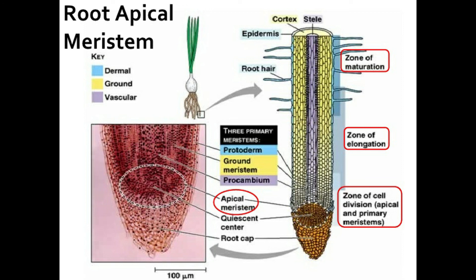Types of growth. Growth is of two types. Primary growth is aided by the apical meristems. Secondary growth is aided by the intercalary or vascular cambium, leading to an increase in thickness.